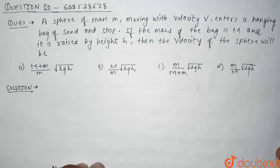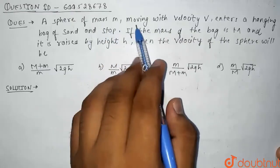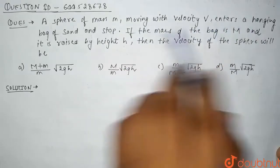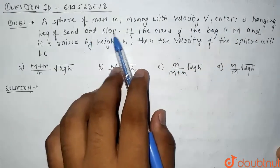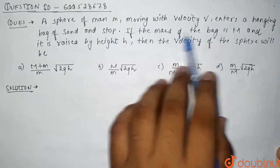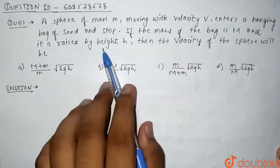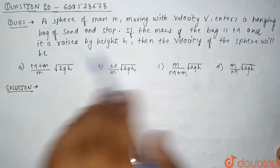Hello guys, so our today's question is: a sphere of mass m moving with velocity v enters a hanging bag of sand and stops. If the mass of the bag is capital M and it is raised by height h, then find the velocity of the sphere.